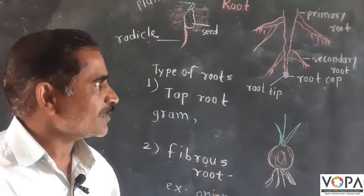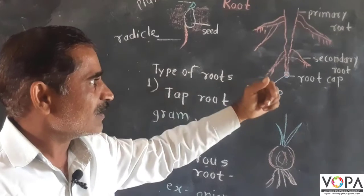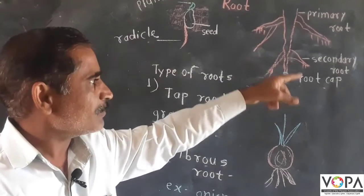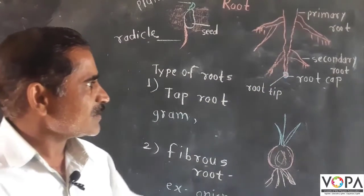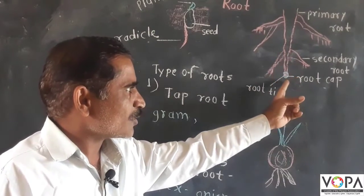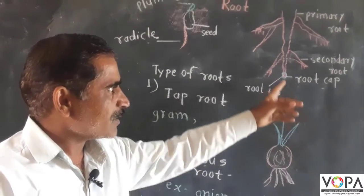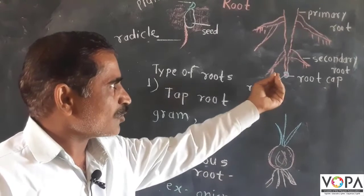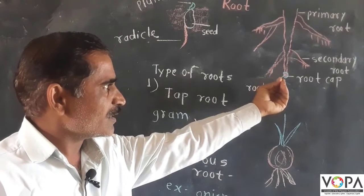Root absorbs water and minerals from the soil and provides to the plant. At the tip of the root, the root tip is delicate and requires protection.